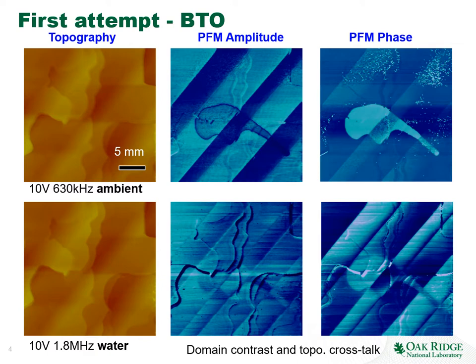This is another example where we measure barium titanate — we do it in ambient environment and then measure the same region in water. In this case we used very high frequencies, something like half a kilohertz to half a megahertz, and in another case almost two megahertz. You can see that despite using a very high bias amplitude on the order of 10 volts, the imaging is absolutely stable. We have a considerable crosstalk, but nonetheless we image domain structures without any problems with stability.